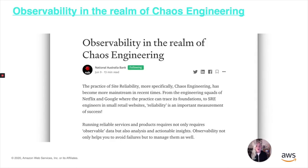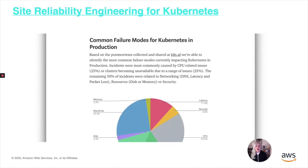The National Australia Bank also wrote a Medium post called Observability in the Realm of Chaos Engineering, where they said that observability not only helps you avoid failures but manage them as well. It goes into detail about how they monitor their services and infrastructure on AWS and what kind of chaos engineering work they're doing. I also did some research on different types of failures that have occurred on Kubernetes — looking at all reported outages and bucketing them into categories: CPU failures, disk, black hole, memory, latency, IO, security, and that type of thing.